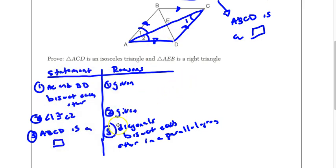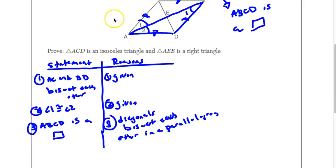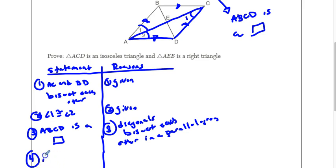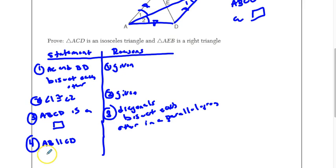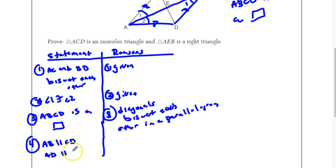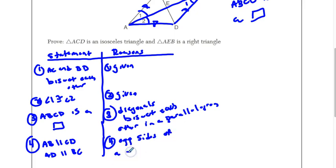Now that I've proven it's a parallelogram, I'm going to start using alternate interior angles. But first, just like the proof we did before, we're going to state this: we know that AB is parallel to CD, and AD is parallel to BC. The reason I know that is because opposite sides of a parallelogram are parallel.